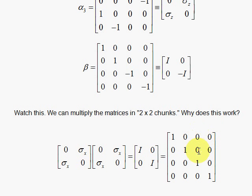And remember, that's a 2-by-2 matrix. And then sigma x times 0 plus 0 times sigma x is 0. And sigma x times sigma x plus 0 times 0 is then sigma x squared, which is identity.